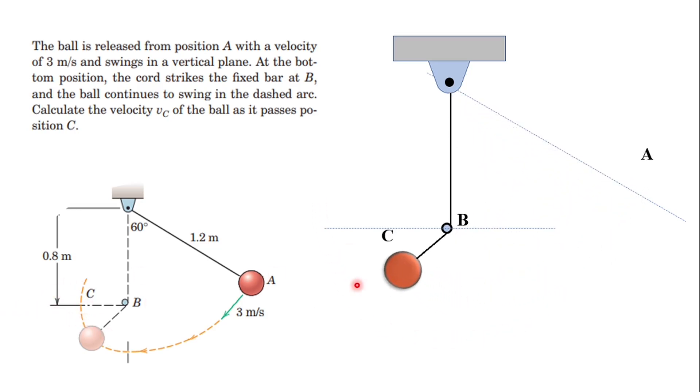Let's see the animation. The ball was initially at point A and then was launched with the initial speed of 3 meters per second. Once it moved, there is an obstacle at point B.